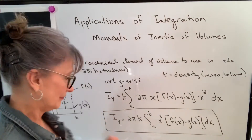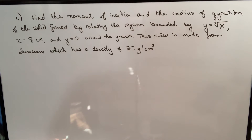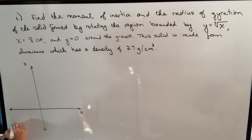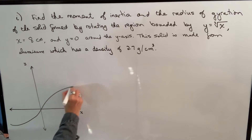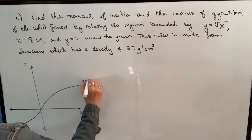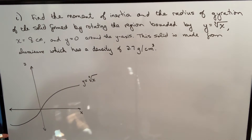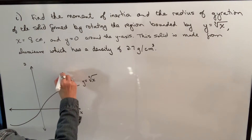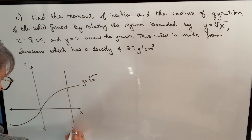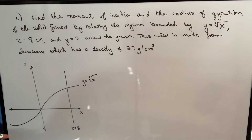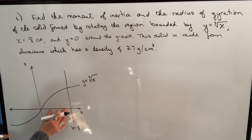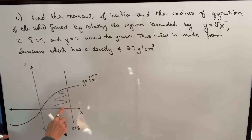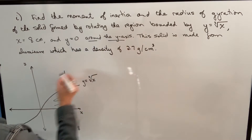Let's take a look at an example. Find the moment of inertia and the radius of gyration of the solid formed by rotating the region bounded by y equals the cubed root of x, x equals 8 centimeters, and y equals 0. This is the area we're dealing with bounded by those three things, and it's rotating around the y-axis.